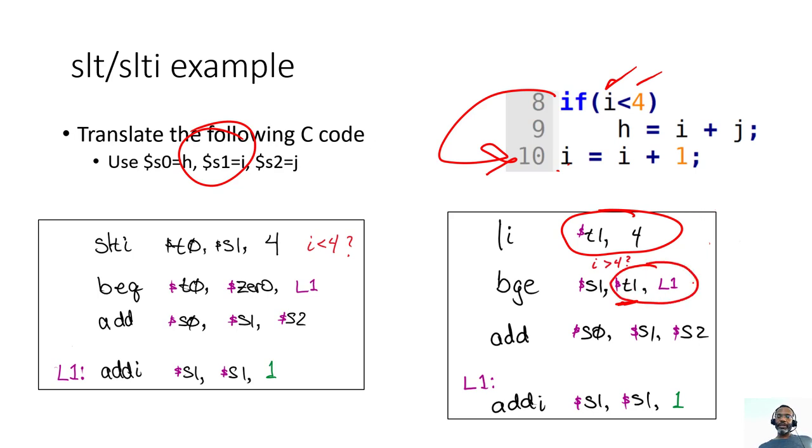And so what I'm looking at is s1, which is i, and I'm looking to see if it's greater than or equal to 4, which is in t1. And so if i is greater than or equal to 4, that's saying that this is false. The opposite of i being less than 4, the opposite is that it's greater than or possibly equal to 4.